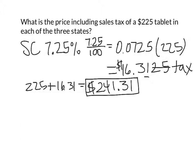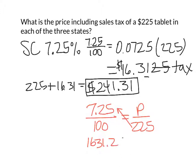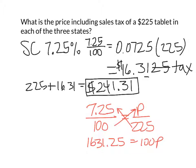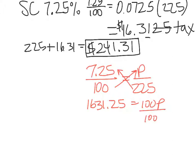Now, this is not the only way we could have figured this out. We could have also set up a proportion: 7.25 is to 100 as what part, the sales tax is the part, is to the whole, and the whole is 225. If we cross-multiply, we would get 16.3125 equals 100p.